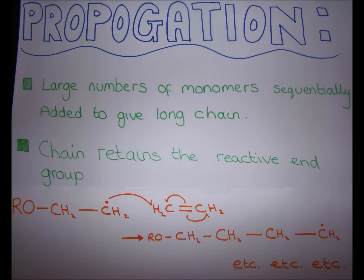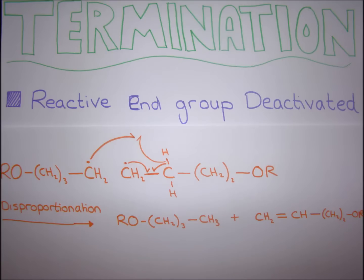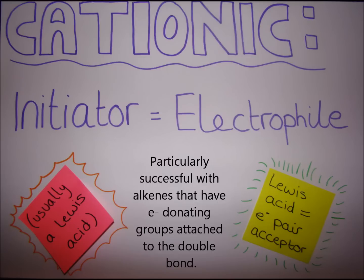More monomer units add one by one during propagation. There are two mechanisms of termination: chain combination, where two radicals on different chains react to form a bond, and disproportionation, where one chain is reduced to alkane and the other oxidised to alkene.